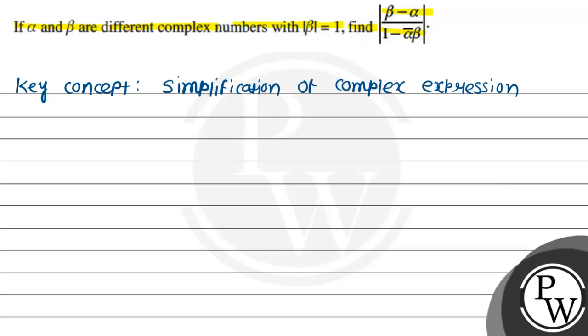Consider the given expression, that is beta minus alpha divided by 1 minus alpha bar times beta. As a note, we know that z times z bar is equal to modulus of z entire square. It will be complex number and its conjugate multiplication, modulus of z square.